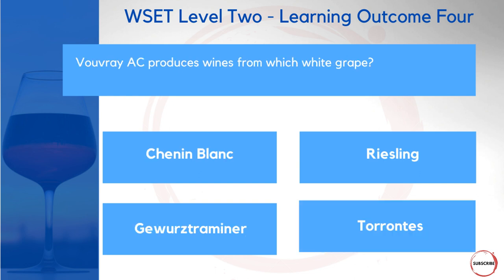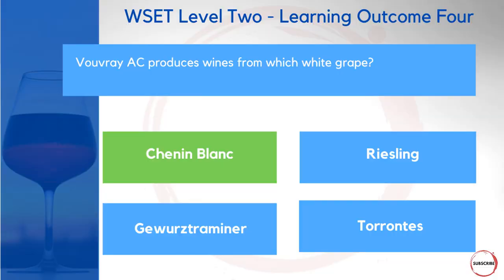Vouvray AC produces wines from which white grape? Is it Chenin Blanc, Riesling, Gewürztraminer, or Torrontés? The geographical indicators don't always go down to individual appellations in the slides, but the book will. Vouvray is an AC that produces wine made from Chenin Blanc in the Loire Valley.